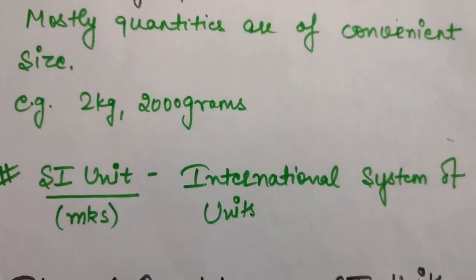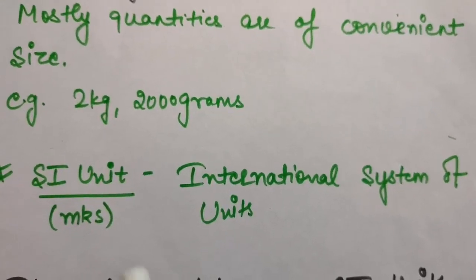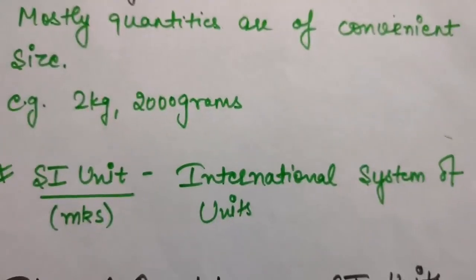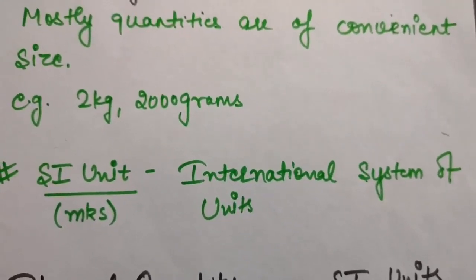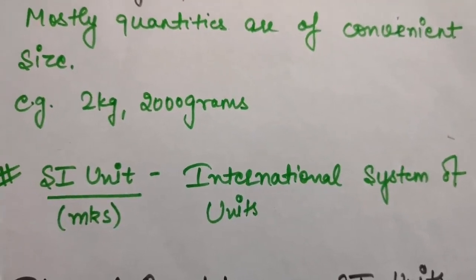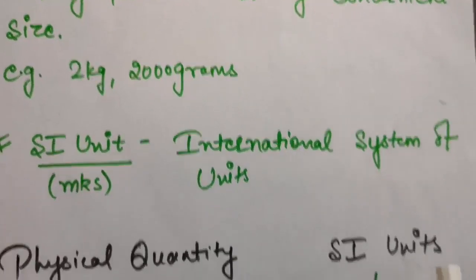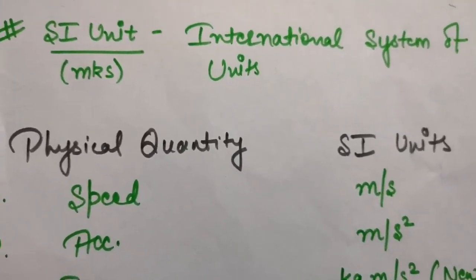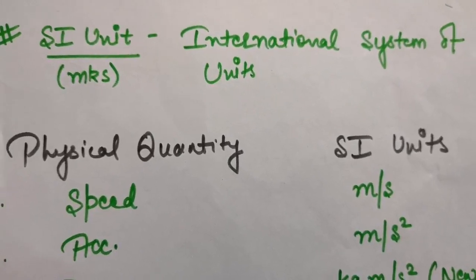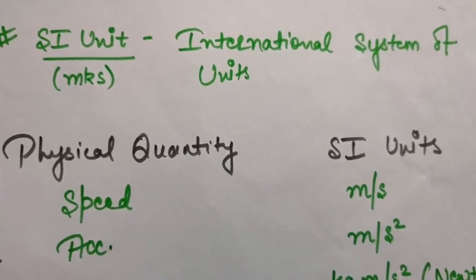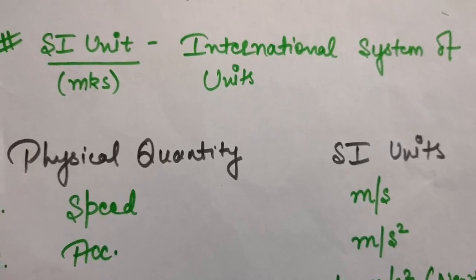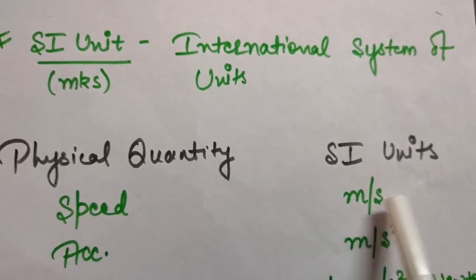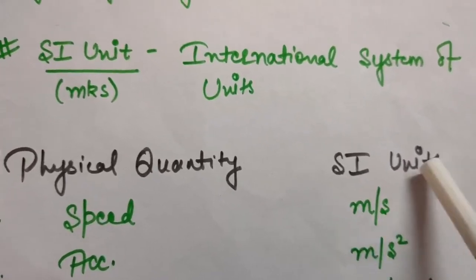You must have also heard about SI units. The full form is International System of Units. Whenever you describe any quantity in its MKS unit, that becomes its SI unit as well. For example, you know speed and its formula — distance upon time. If I am dealing with the MKS system, distance will be in meters and time in seconds. So the MKS unit for speed will be meter per second, and this is nothing but its SI unit.